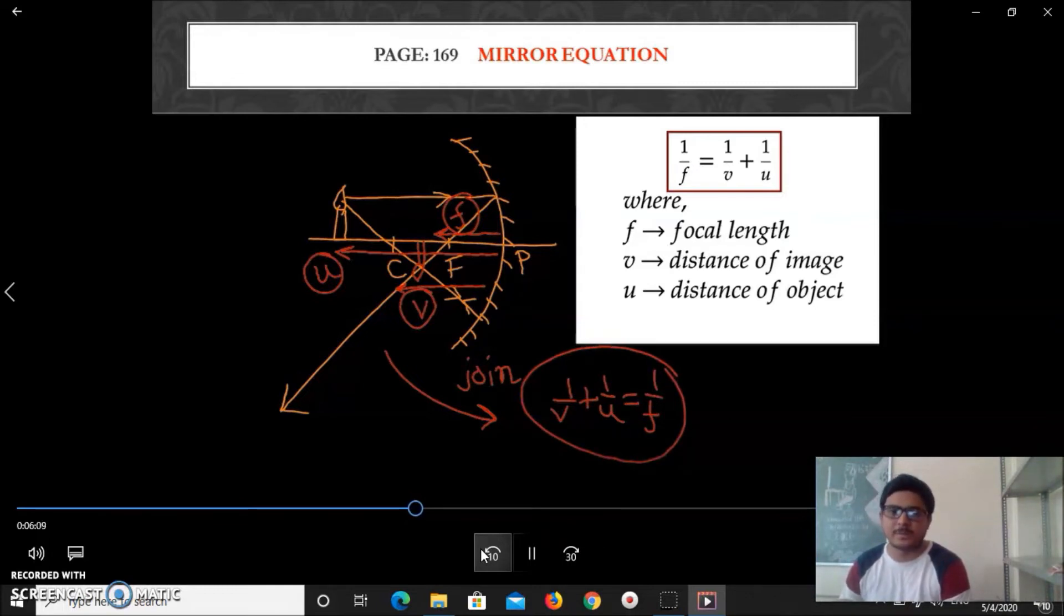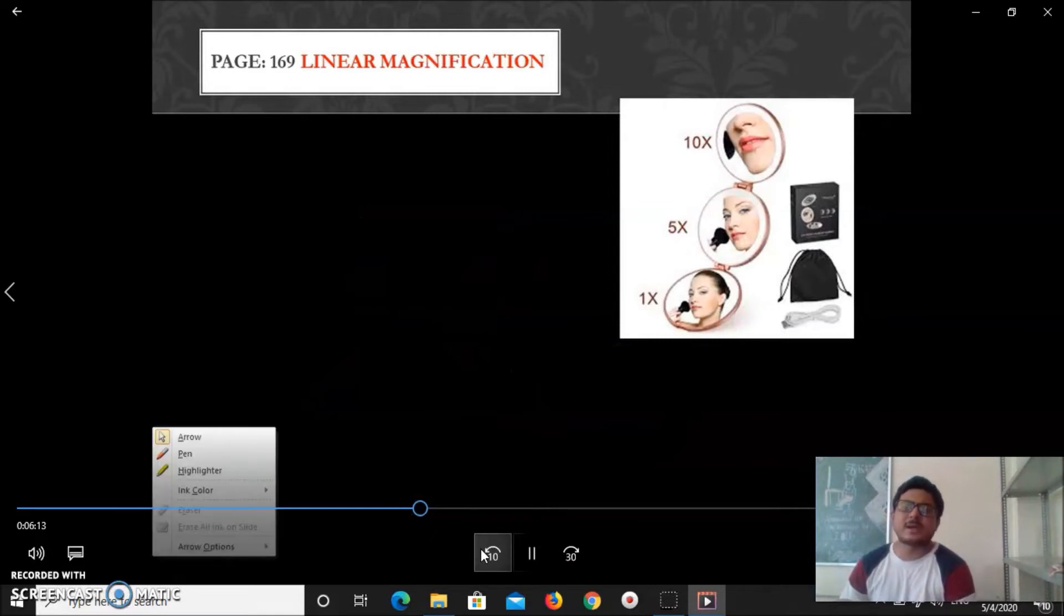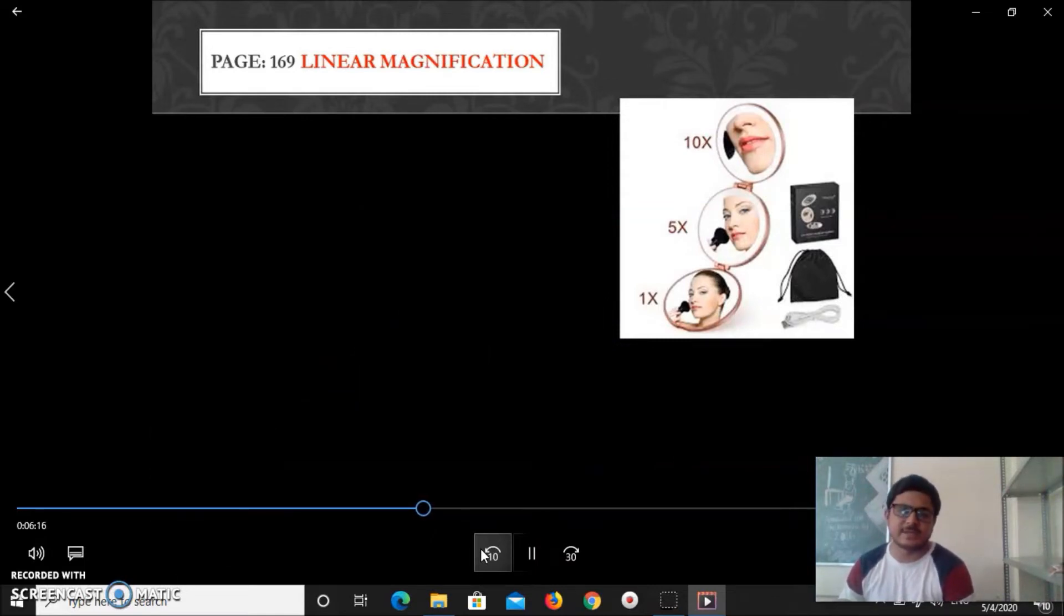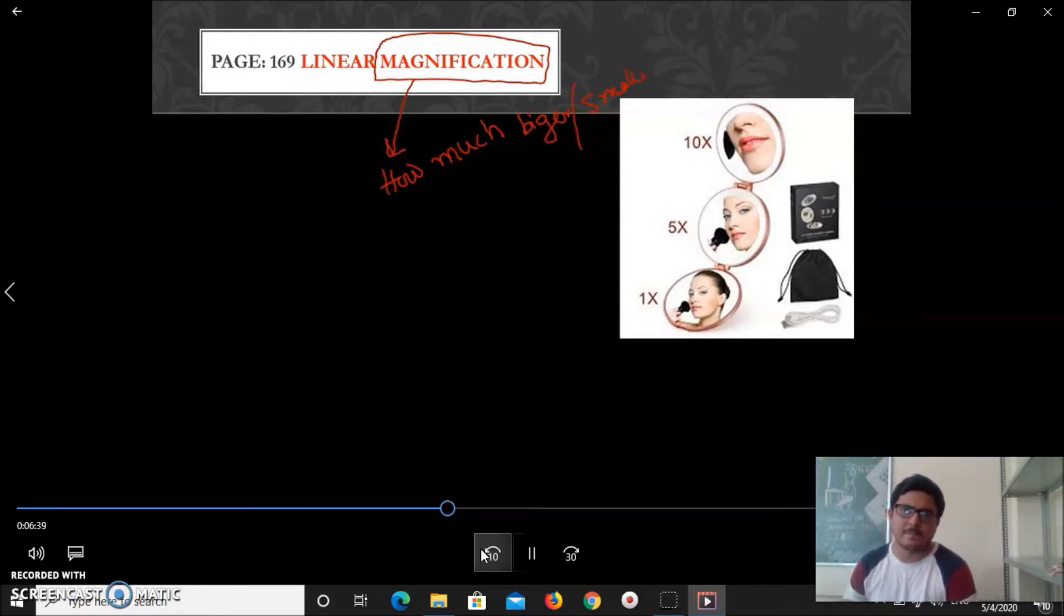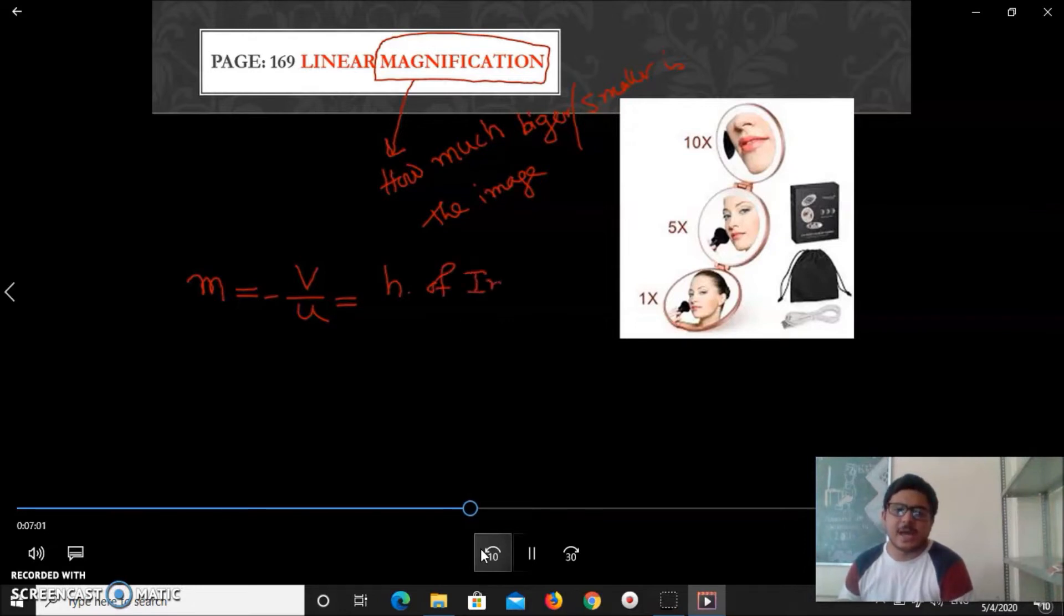Next vital topic is linear magnification. Dear cadets, for mirror there are three-four types of magnification. In our tenth class syllabus, linear magnification we will discuss. Simply, what is magnification? It's easy: how much big an image or small image compared to its object. That is known as the magnification.